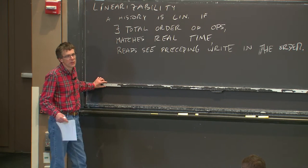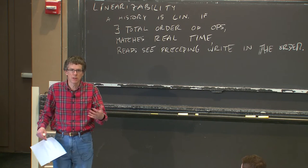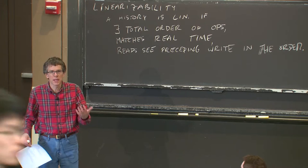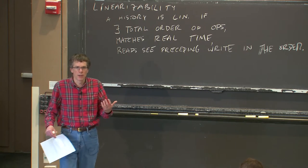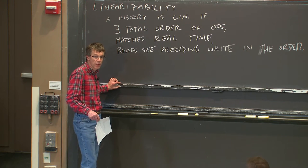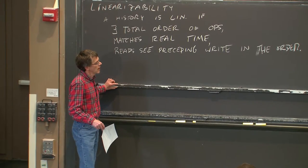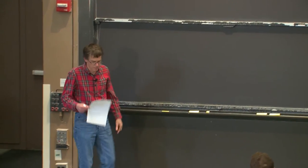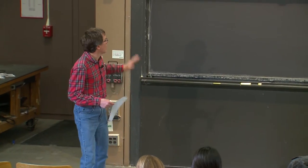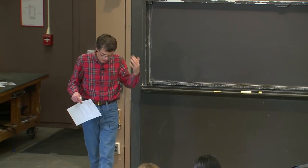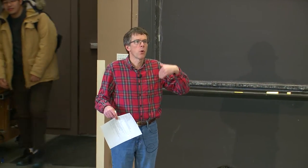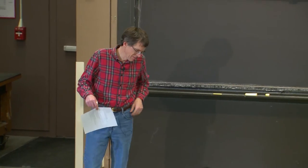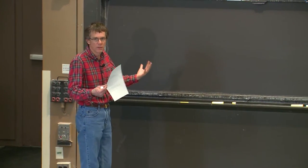One thing you need to be able to do is look at a particular sequence of operations, a particular execution of some system that executes reads and writes, like your lab three, and be able to answer the question: was that sequence of operations linearizable or not? We're going to continue practicing that, plus I'll try to establish some interesting facts about the consequences for the systems we build. Linearizability is defined on a particular operation history — the thing we're talking about is a sequence of requests by clients that got some responses at different times.